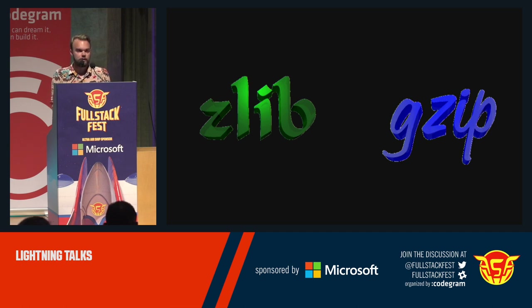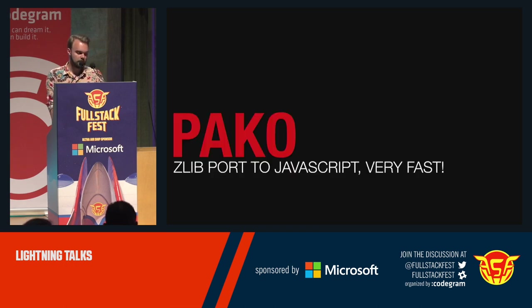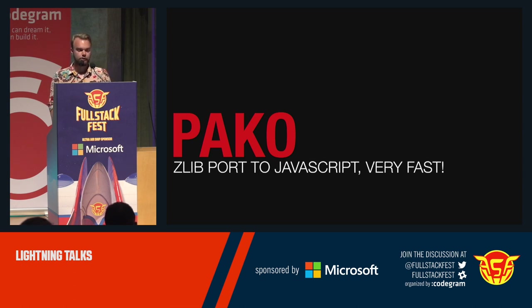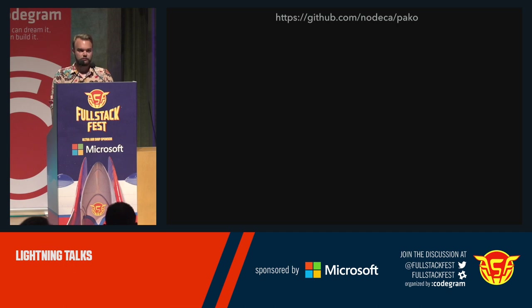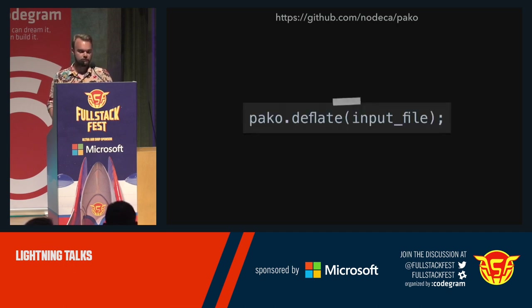So maybe can we compress data when uploading? Maybe we can try to do the same thing — not downloading but uploading. And we can. There is a JavaScript library called Paco that does exactly the thing we want. It's a Zlib port to JavaScript, very fast. You just go to their GitHub, download it, and use it like this: Paco.deflate — and then you throw your file there.